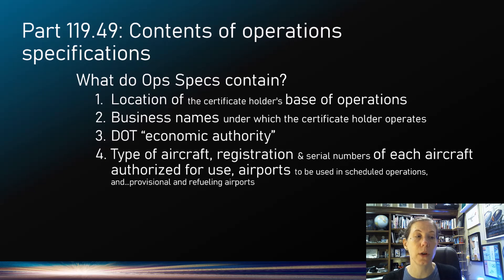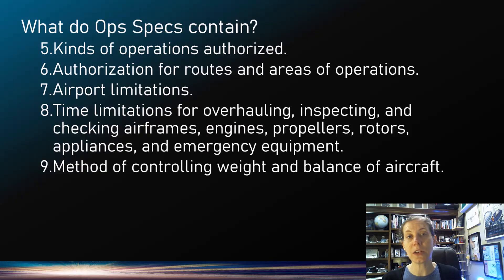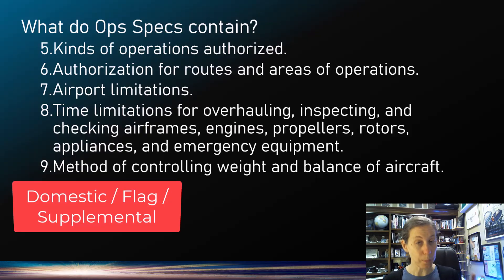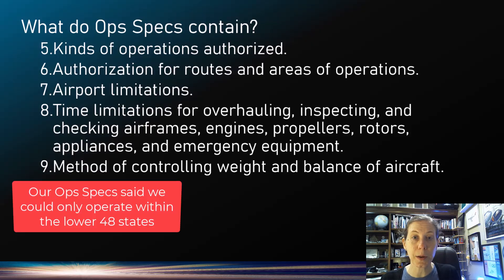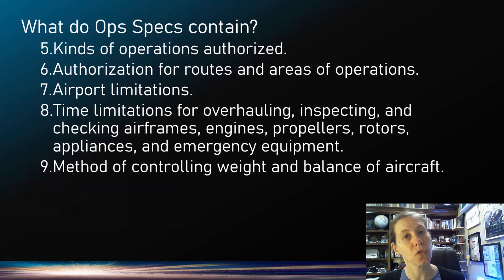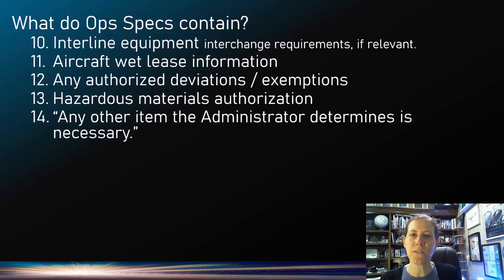Also included are the airports you're going to use, and the different kinds of operations — domestic, flag, supplemental. At the airline where I worked, we were a supplemental air carrier. There's also authorization for where you can operate; when we first started, we were a charter company flying only in the 48 contiguous United States. Ops specs even include things like how you're going to control the weight and balance of your aircraft — that really matters and has to be documented. And if you're going to lease aircraft to another company, that would be listed in your ops specs as well.